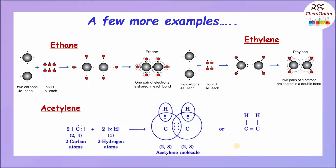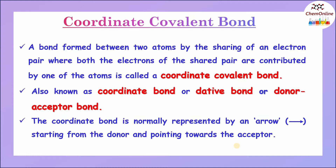So, a covalent bond is formed between two or more atoms by sharing an electron pair, and this type of bond is formed between atoms which do not differ much in their electronegativity. The last type is the coordinate covalent bond. In this type of bond, there also occurs the sharing of an electron pair between two atoms, but both electrons of the shared pair are contributed by only one of the atoms. Such a bond is called a coordinate covalent bond, also known as a coordinate bond, dative bond, or donor-acceptor bond.